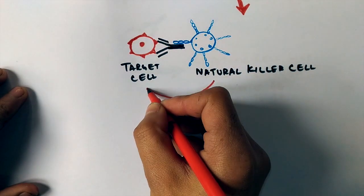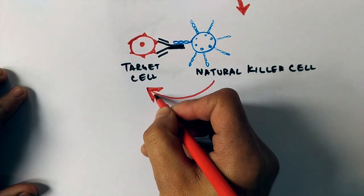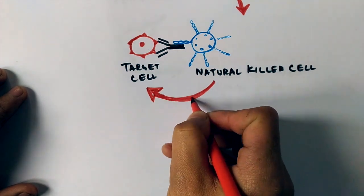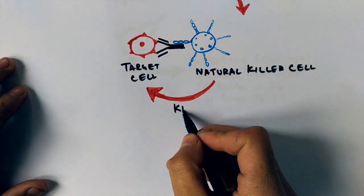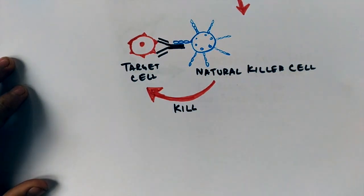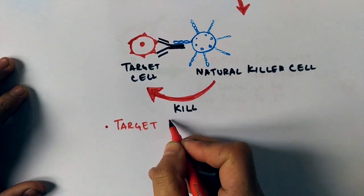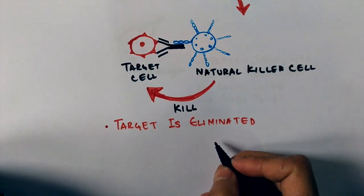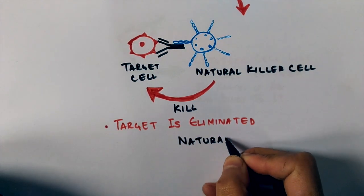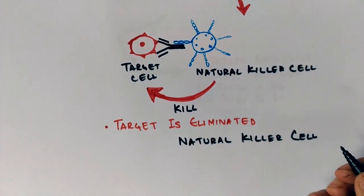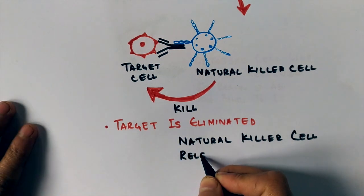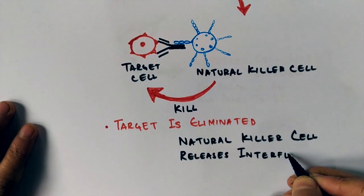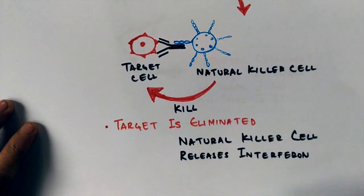Then it sends a signal to kill the target cell, and ultimately the target is eliminated. Natural killer cells have the tendency to release interferons, interferon gamma, which kills the target cell or any pathogen.